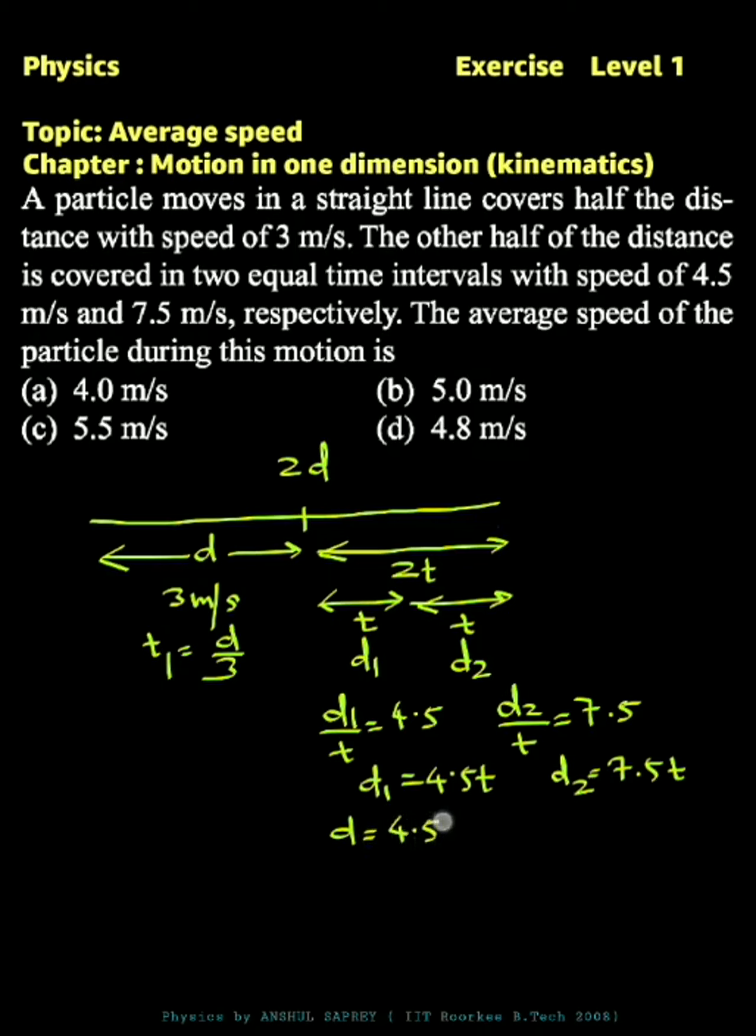So the time taken during the second half distance of the entire journey is 2t, which is equal to 2 into t. And t can be written as d by 12, so that is equal to d by 6. So for the entire journey,